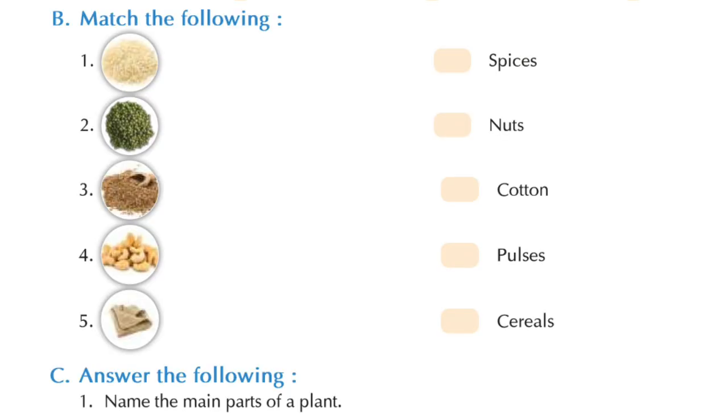Next, let's proceed to question B, match the following. Children, here, they have given us five different pictures, right? So we have to match them whether these are spices, nuts, cotton, pulses, or cereals. Now, in the first picture, what do you see? These are rice. So rice comes under which category? Yes, it comes under cereals, right? So we have to match the first picture with cereals.